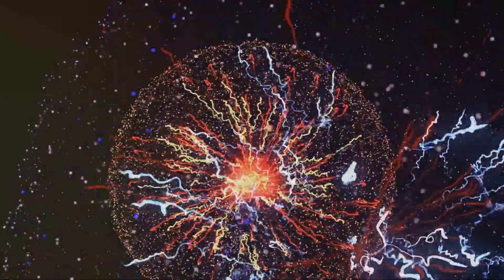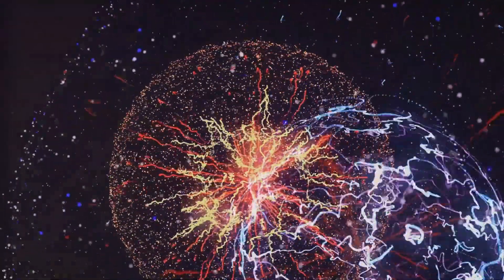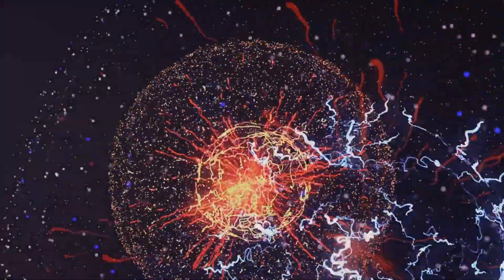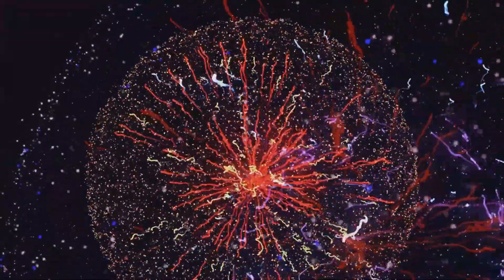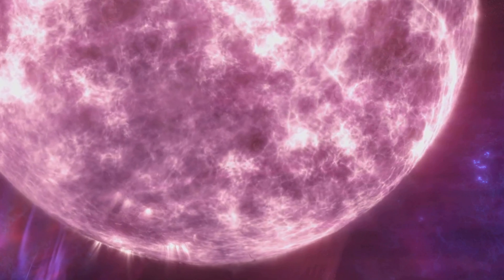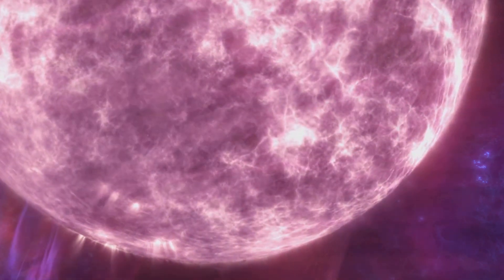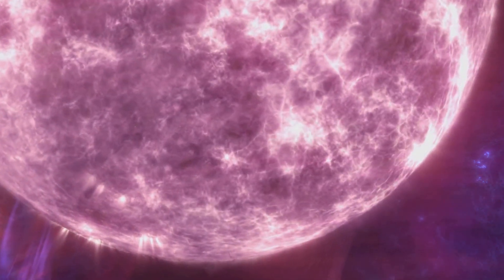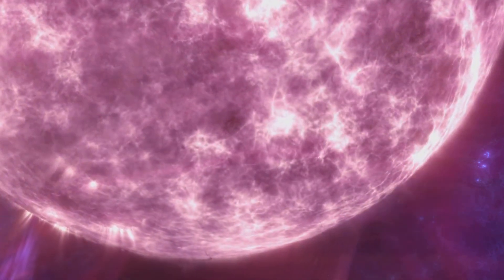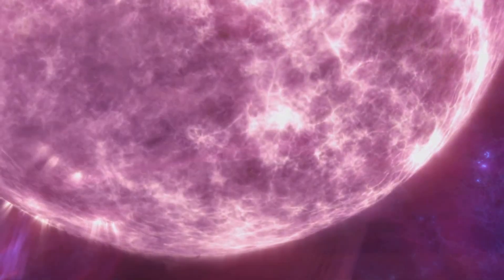Dark matter, despite its name, isn't dark at all. It's completely invisible to us because it doesn't interact with electromagnetic radiation, like light. However, we know it exists because of its gravitational effects on visible matter. Its presence is inferred by the way galaxies rotate and cluster together, defying the laws of physics if only visible matter were at play. It's like an unseen hand guiding the cosmic dance of galaxies.